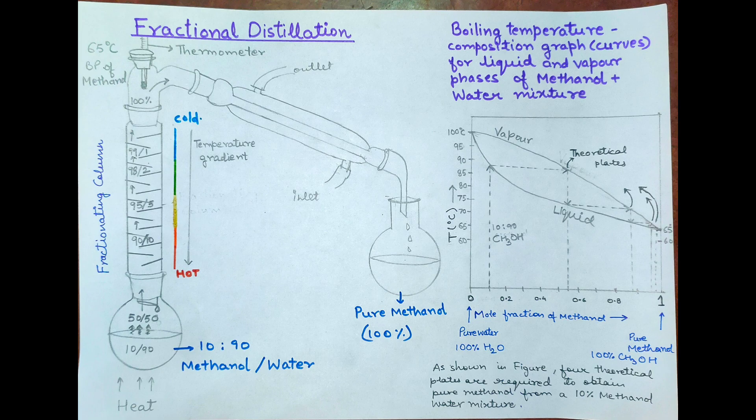I will briefly explain how a fractionating column works. Consider we have a mixture of 10% methanol in water. When we boil it, the composition of vapour will be 50% according to the diagram shown on the right. Then it travels through the column where it partially condenses and falls back. Thus a temperature gradient is established inside the column from bottom to top and the column allows for the vapour to interact with the refluxing liquid and thus an equilibrium is attained.